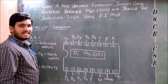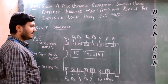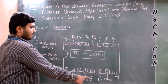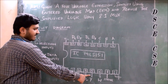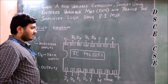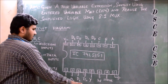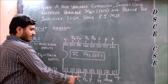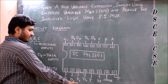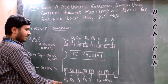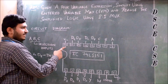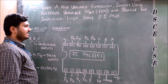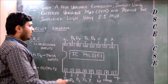Pin number 16 is connected to VCC and pin number 8 is grounded. Across pin number 5, we will take the output. Pin number 4 is connected to D0, pin number 3 to D1, 2 to D2, 1 to D3, 15 to D4, 14 to D5, 13 to D6, and 12 to D7.